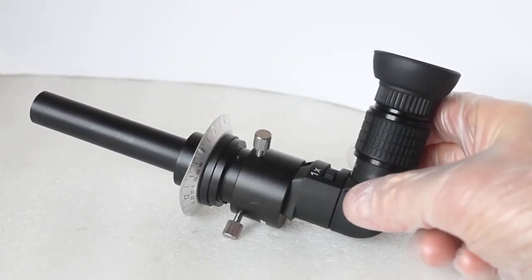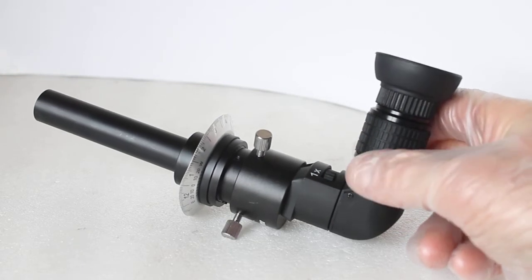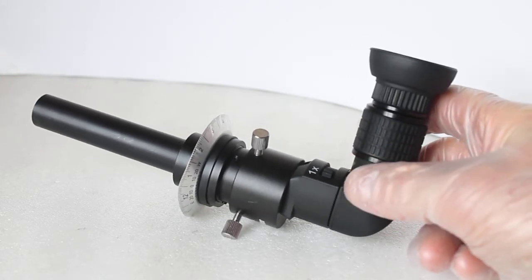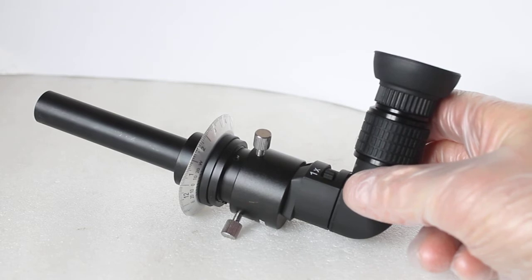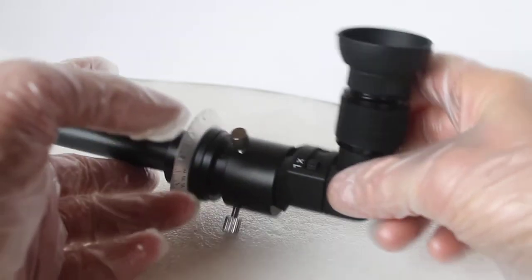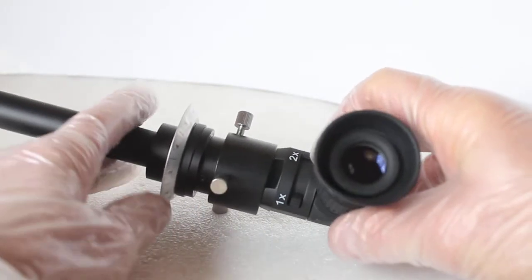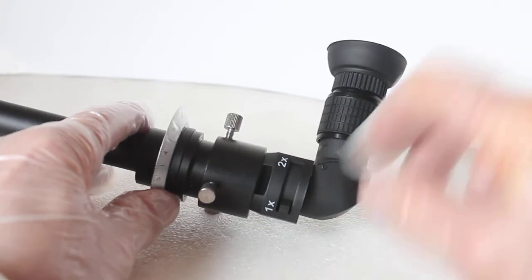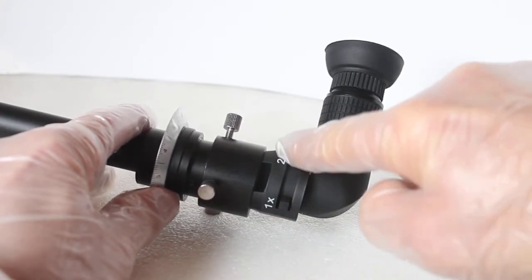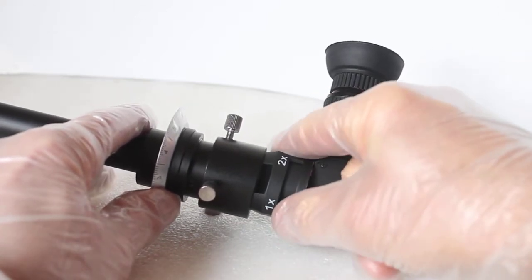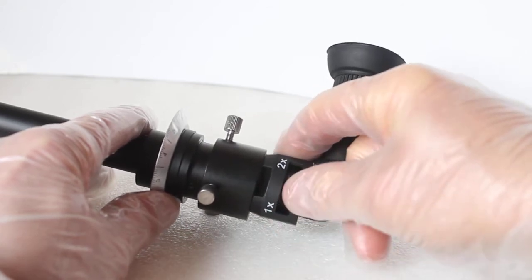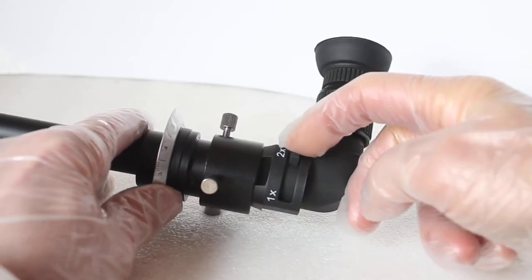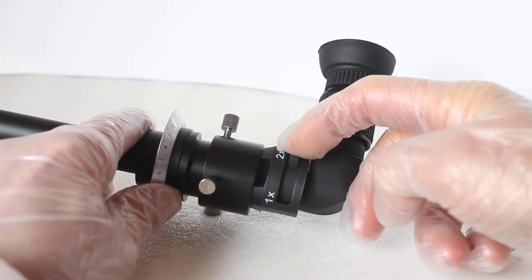To answer a question from one of my previous videos, the image is still upside down and left-right orientation is opposite. For a closer look at the engraving, there's a one times here and a two times. It's not like a zoom, it just flips a mirror or lens inside and it goes from one to two times so you can look at the engraving in the center a little bit closer.